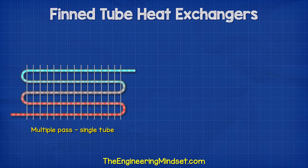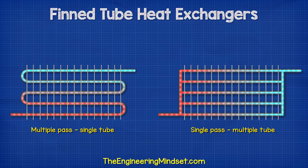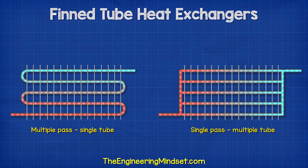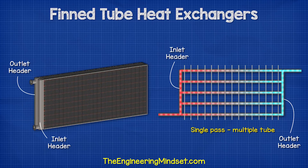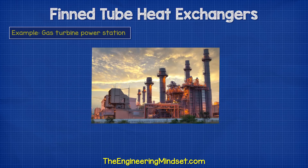In some designs, the fluid will simply flow through the entire length of the tube. Other designs will have the fluid pass through multiple tubes at the same time. These will be connected to a header at the inlet as well as the outlet to facilitate the distribution through the tubes.